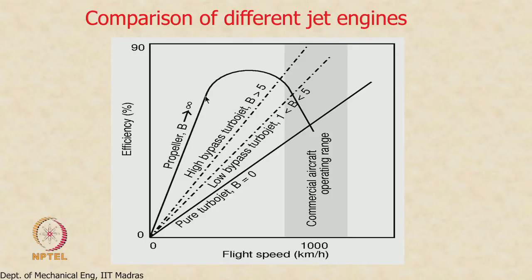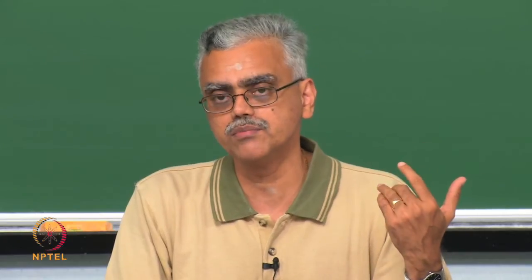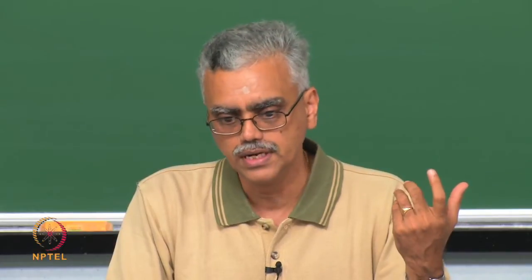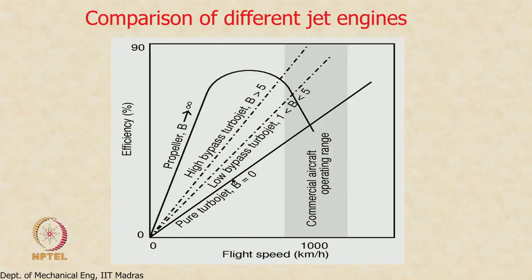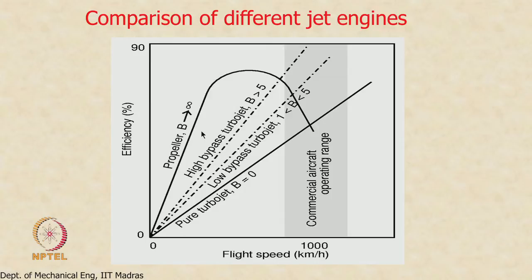The propulsive efficiency of the propeller increases and attains a peak around flight Mach numbers of about 0.5 to 0.6, and then begins to fall as tip speed exceeds the speed of sound, causing shocks and losses. Comparing the efficiency of a turbojet with that of a propeller at low flight Mach numbers, the propeller wins easily. But at high subsonic Mach numbers, propeller efficiency falls and the turbojet catches up and then exceeds the propeller — which is why we migrated from propeller to turbojet.